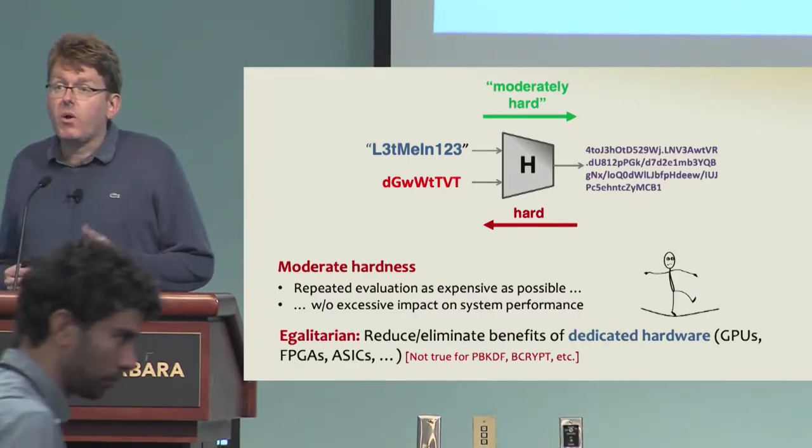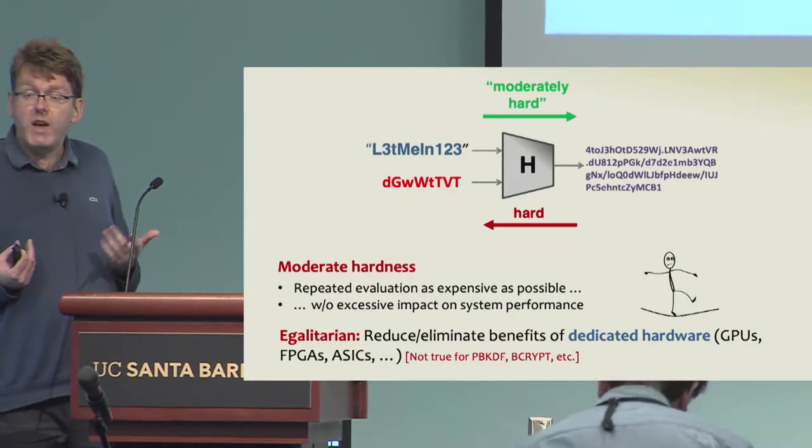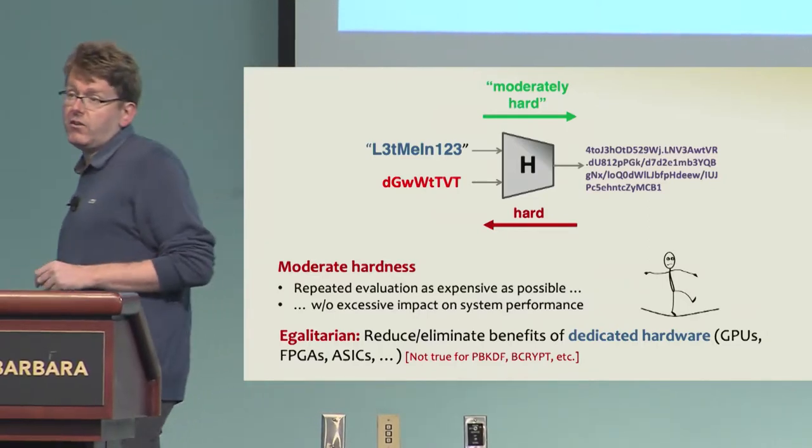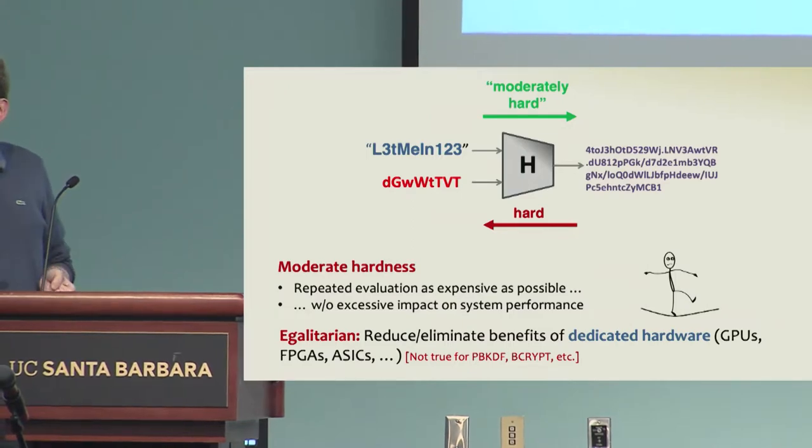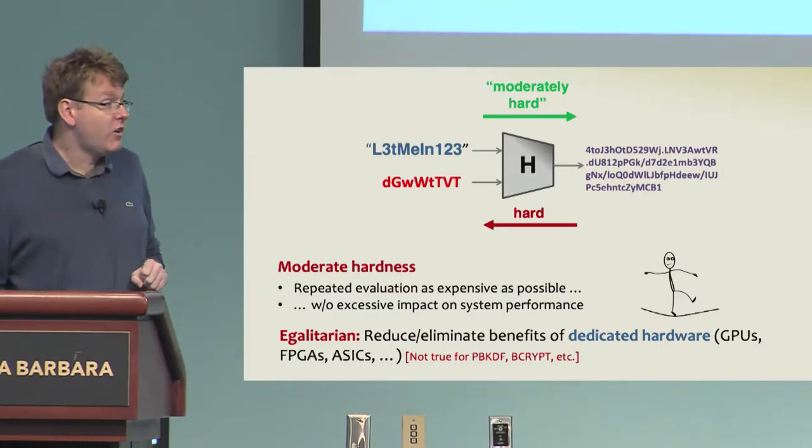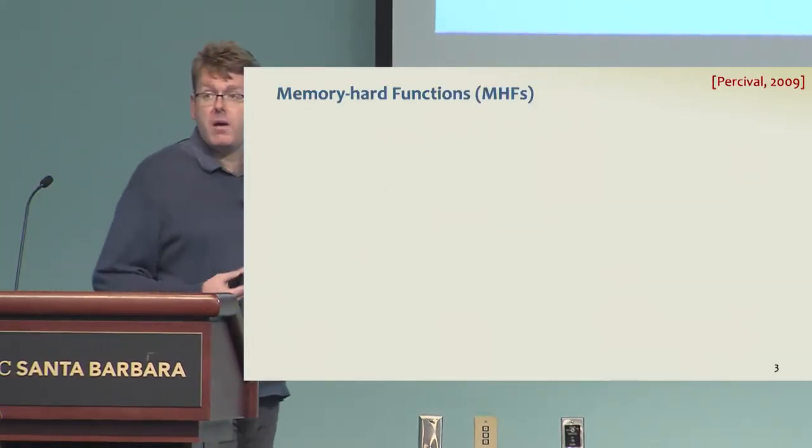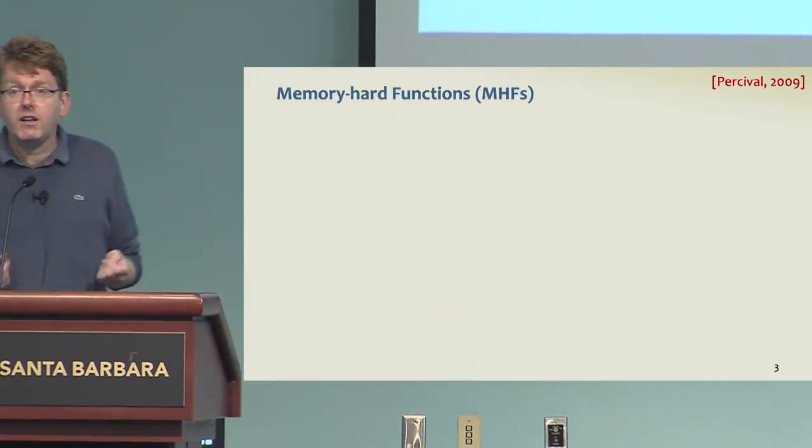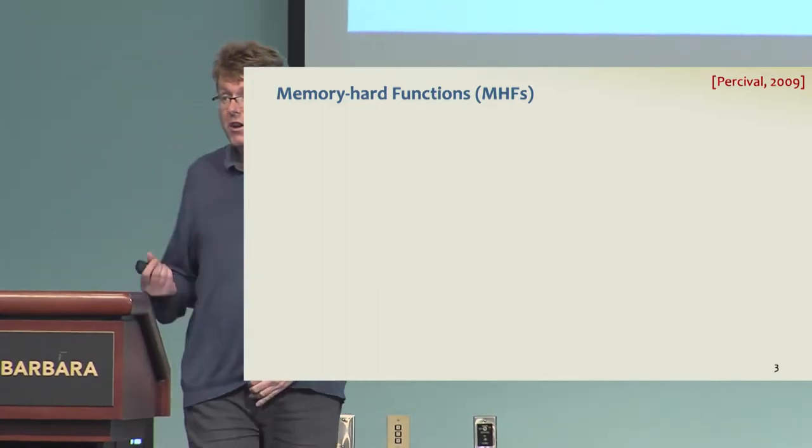This moderate hardness should be somewhat egalitarian, so we wish that dedicated hardware should not give significant benefit in evaluating the function. This property is really not obvious to enforce. For example, legacy password hashing algorithms do not satisfy it. In an effort to satisfy this property, the notion of memory hard functions was proposed. A memory hard function, or MHF for short, is a moderately hard function that is subject to a time memory trade-off in its evaluation.